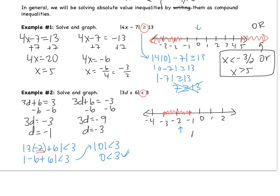Since the graph is shaded in between, this is an and. An and is written as a compound inequality: negative 3 is less than d is less than negative 1. The lower bound is negative 3, the upper bound is negative 1. Remember: the or is written as two separate inequalities, and the and is written together as one.